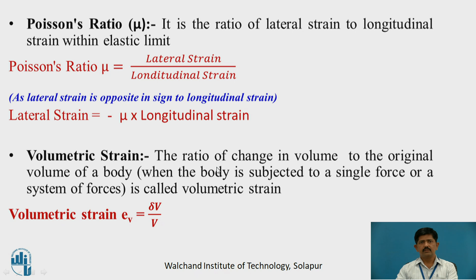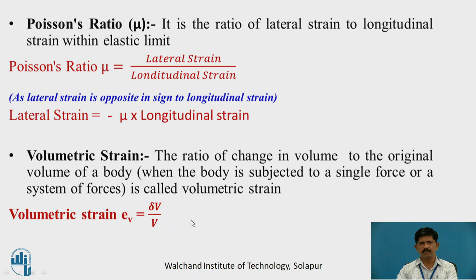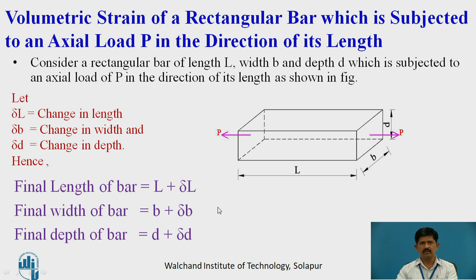Volumetric strain is the ratio of change in volume to the original volume of a body when a body is subjected to a single force or a system of forces. It is called volumetric strain and is denoted by Ev, equal to delta V by V.